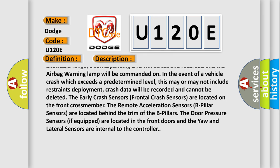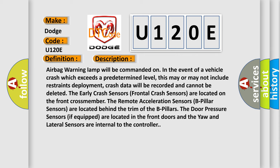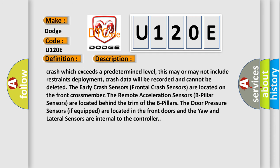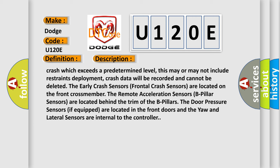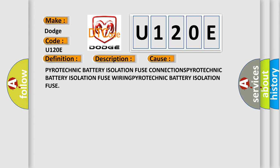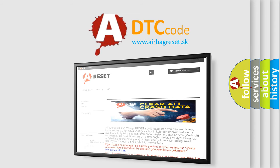Crash data will be recorded and cannot be deleted. The early crash sensors and frontal crash sensors are located on the front cross-member. The remote acceleration sensors, B-pillar sensors, are located behind the trim of the B-pillars. The door pressure sensors, if equipped, are located in the front doors, and the yaw and lateral sensors are internal to the controller. This diagnostic error occurs most often in cases involving the pyrotechnic battery isolation fuse. Thank you for your attention and stay tuned for the next video.